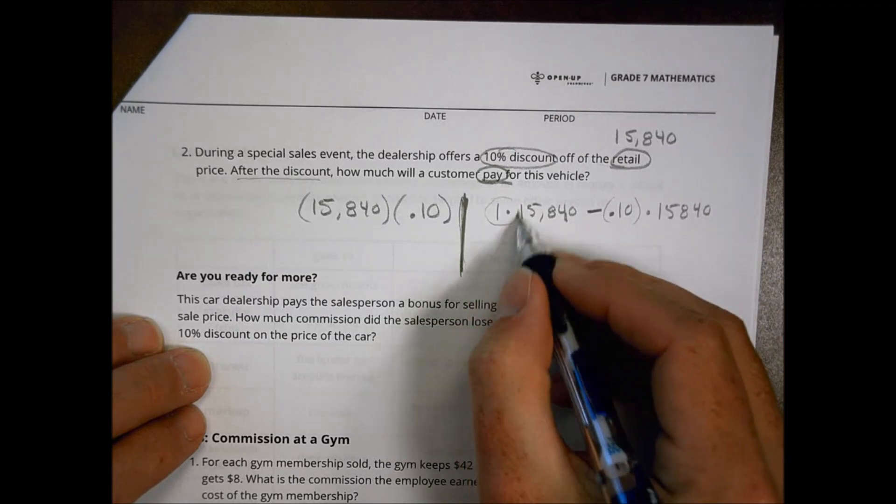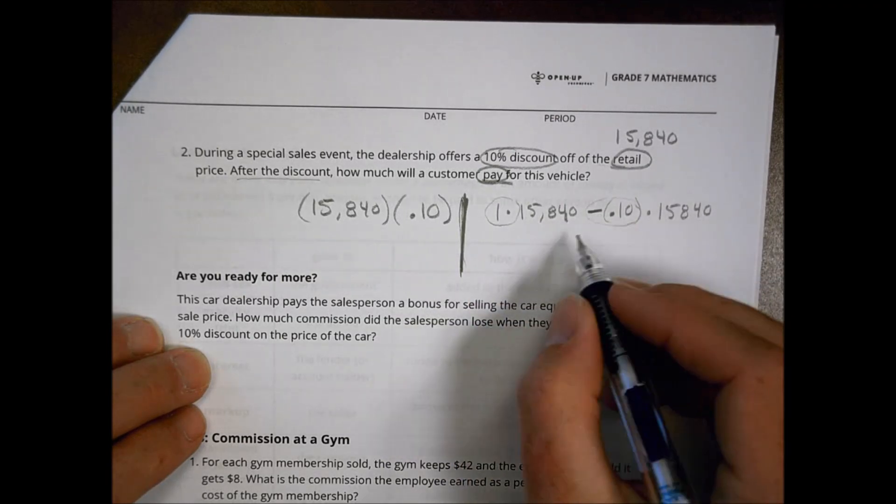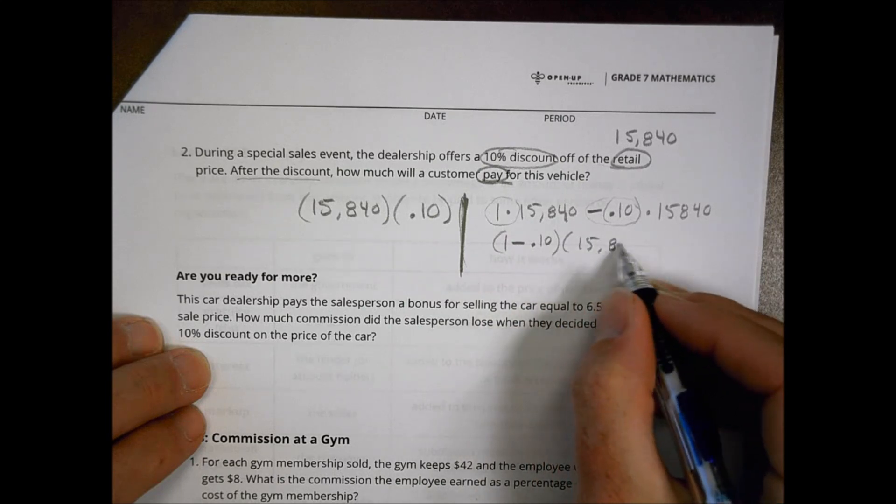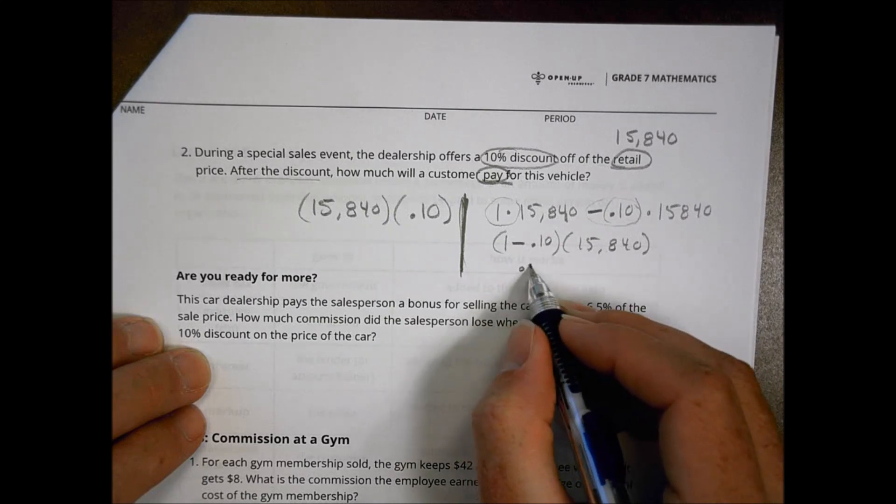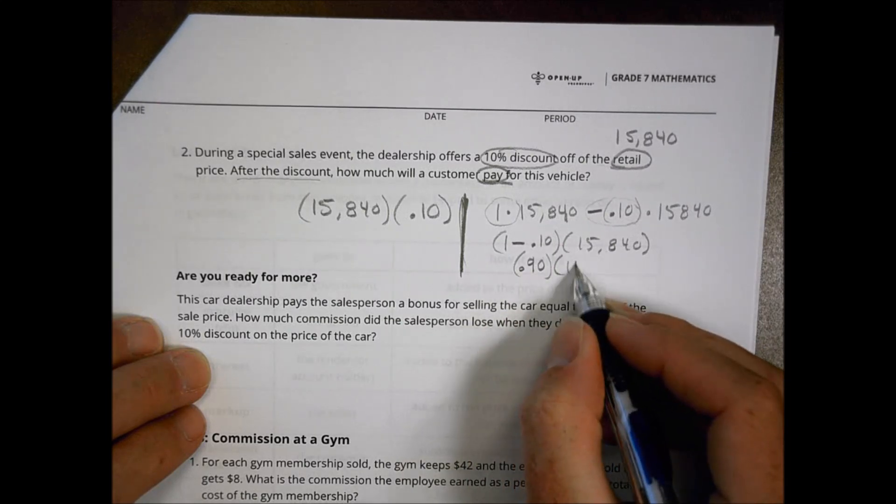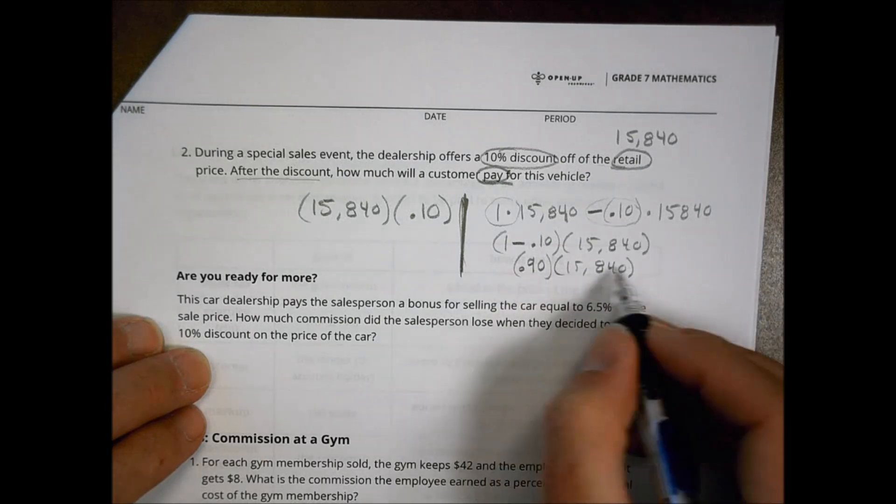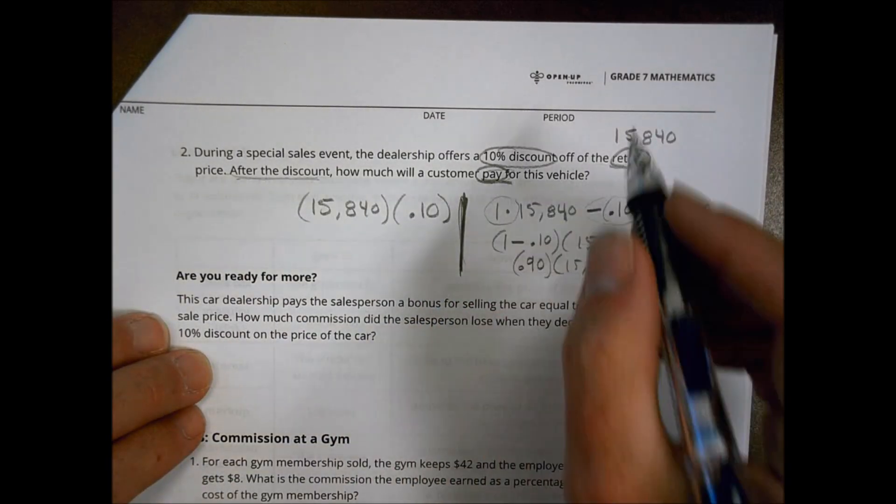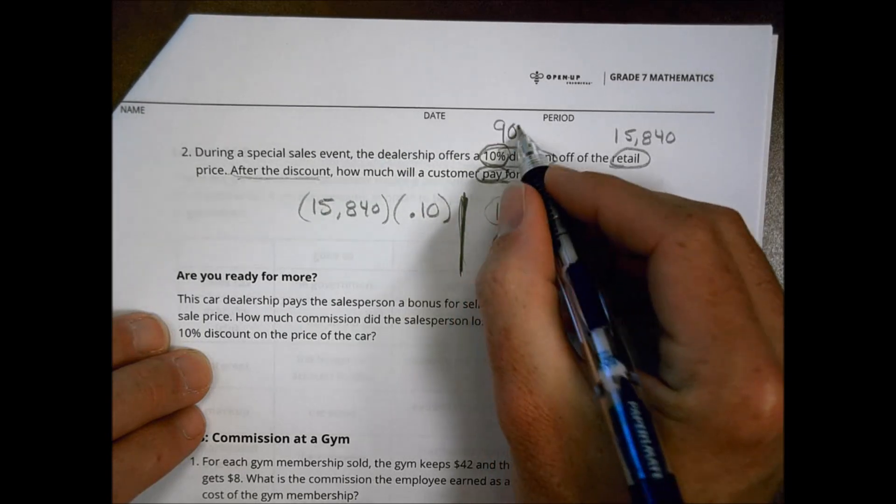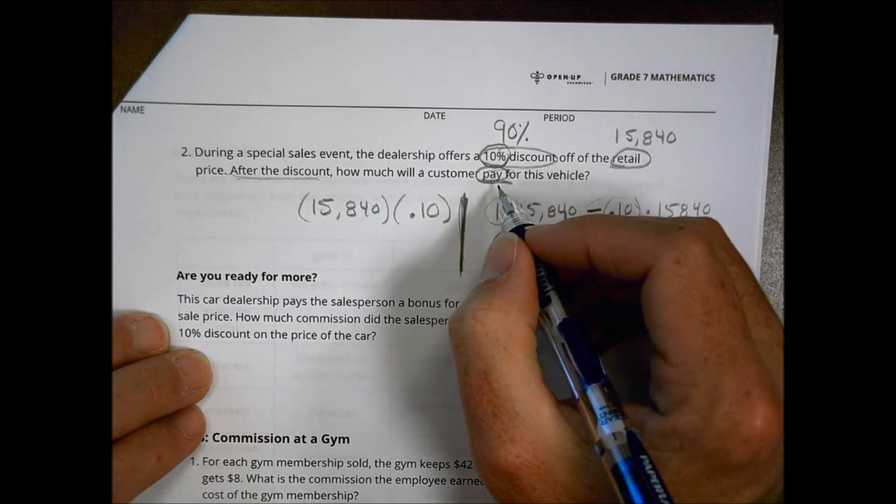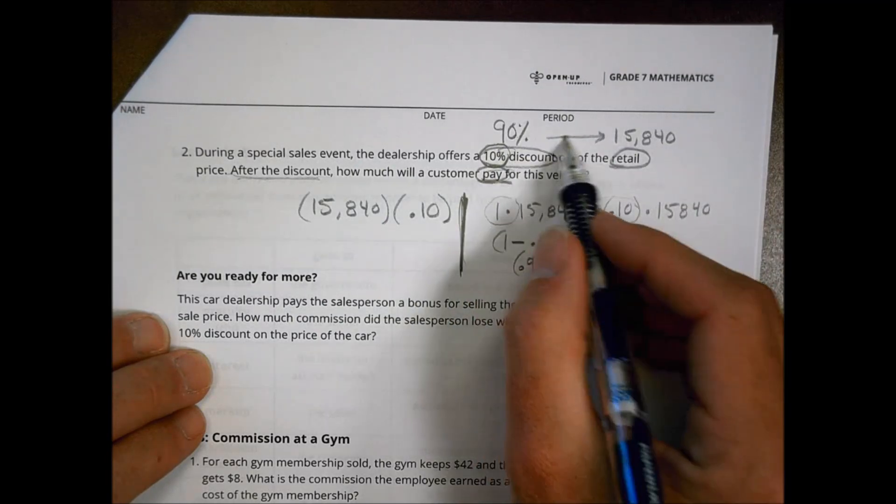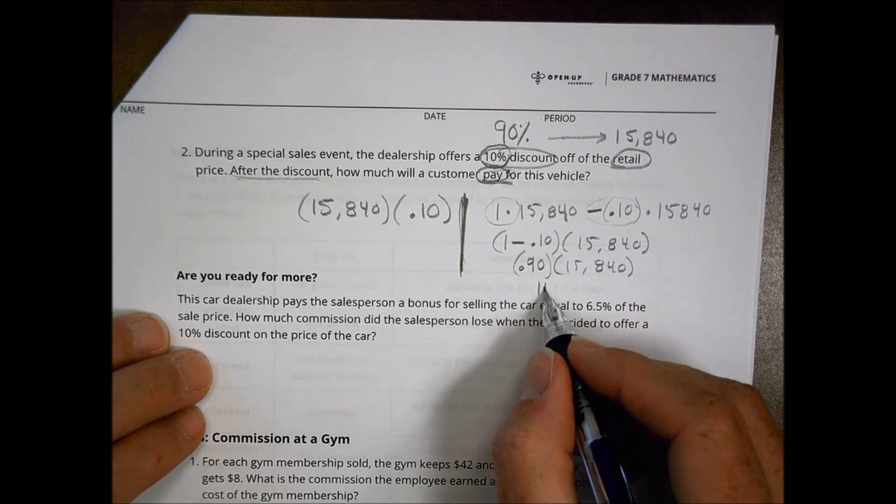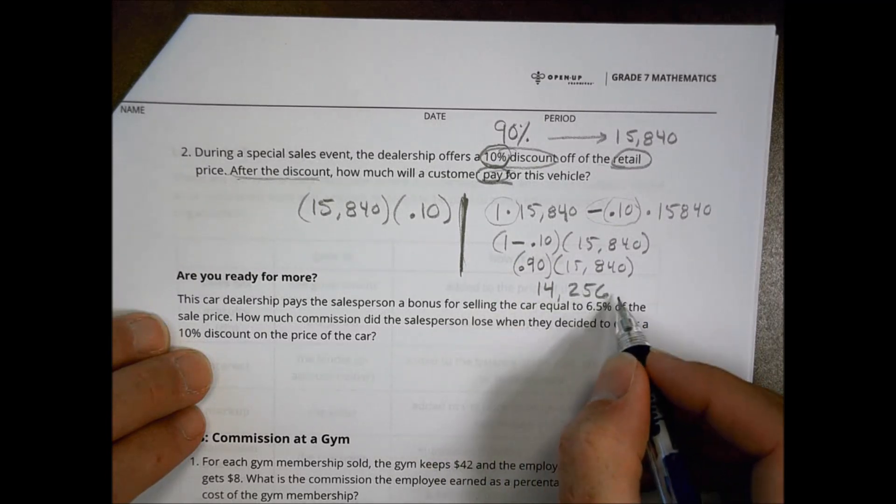At this point now, I can combine things. There's my 1 and my negative .10, so I have 1 minus .10 times 15,840. In this case here, 1 minus .1 becomes .90 times 15,840. This problem here will give me the actual final answer for after the discount, how much will they pay? Because what they're going to pay is that there's a 10% discount, they're going to pay only 90%, that's what's left after you take 10 away from 100, of that amount right there. So 90% of that amount is written out as .9 times 15,840. When you work this out, you arrive at 14,256.